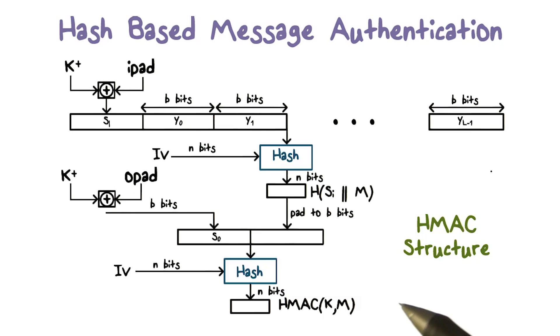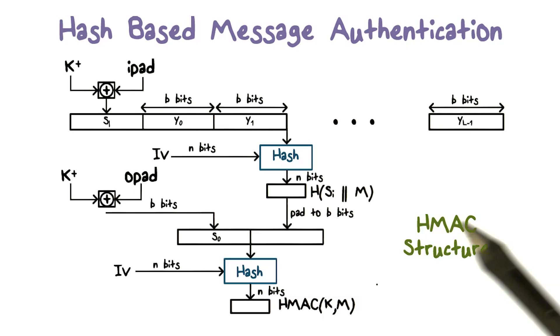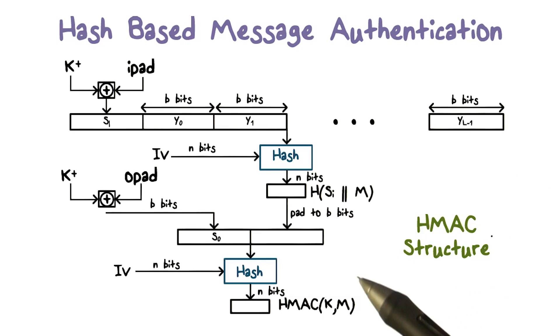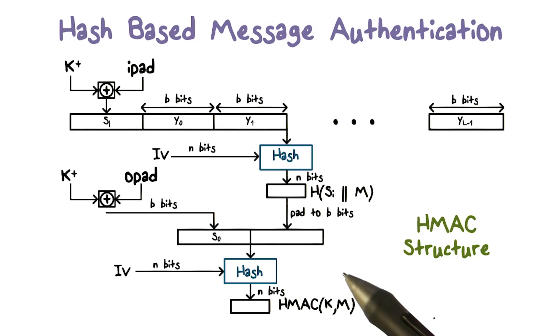And this is how HMAC works. To summarize, HMAC uses an existing hash function and includes a secret key K in the processing.